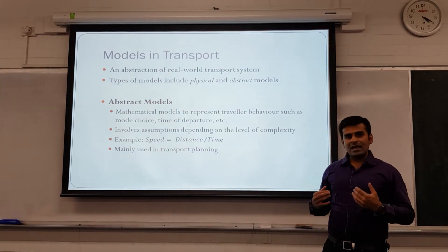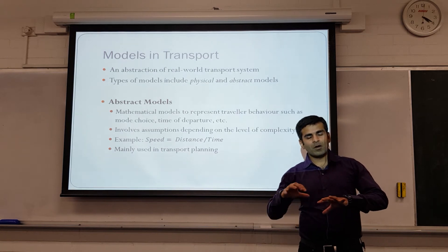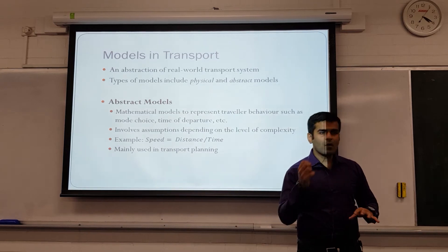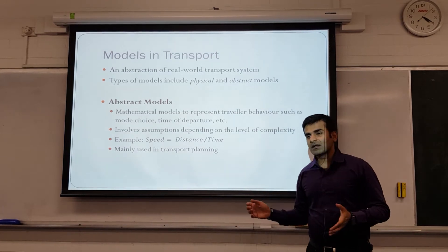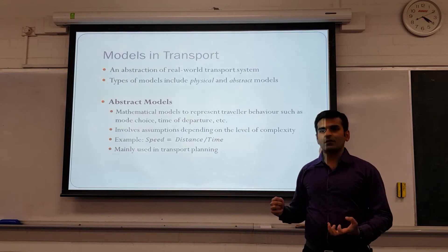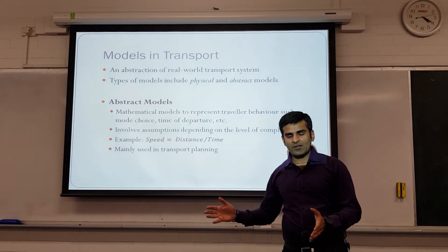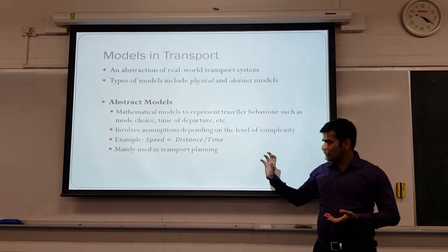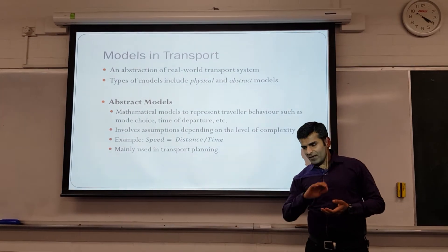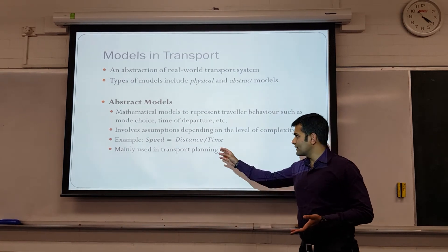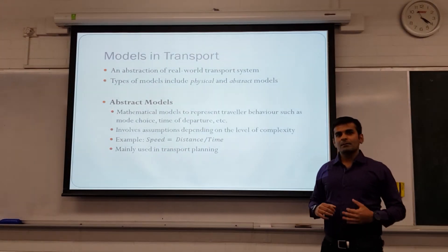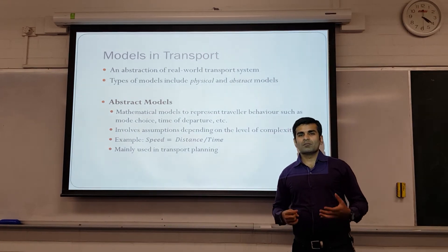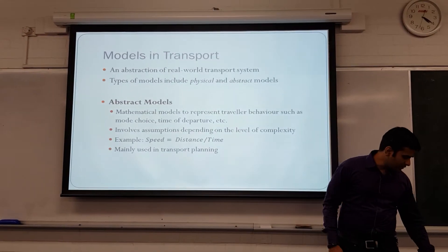Speed can help us understand how it fluctuates over different roads in a network — if we build a model that represents speed on all the roads in a road network, we get a good representation of that variation. That is an example of a very simple mathematical abstract model. But we use much more advanced techniques to answer more complicated questions.